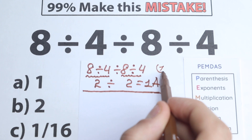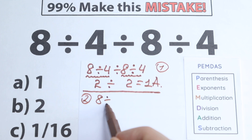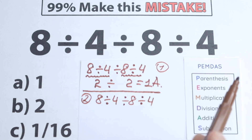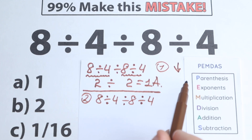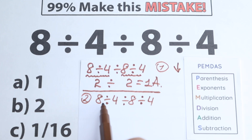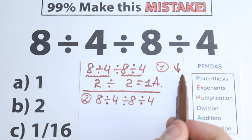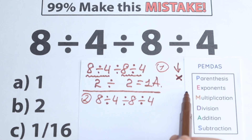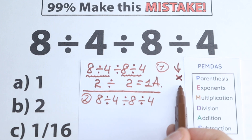In the second case we have 8 divided by 4 divided by 8 divided by 4, and we apply the correct order of operations. PEMDAS works from top to bottom. First step: parentheses. Our question has no parentheses, so we skip this step. Second: exponents. We have no squares or cubes, so we skip this step as well.